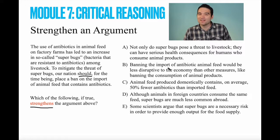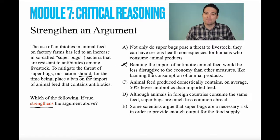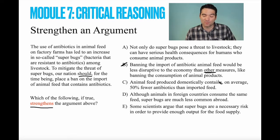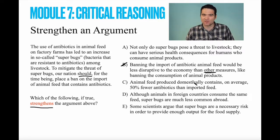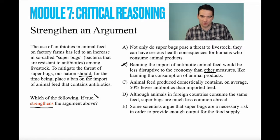Let's look at the answer options — I'm going to eliminate these one by one, out of order. Put your answer in right now. We're going to start by eliminating answer option B: banning the import of antibiotic animal feed would be less disruptive to the economy than other measures like banning the consumption of animal products. What do we care about the economy in this argument? The argument makes no claims about the economy — we don't care if the economy crashes, just as long as we're safe from superbugs.